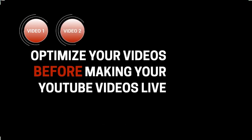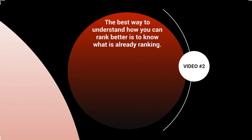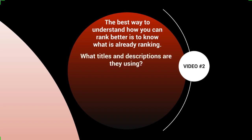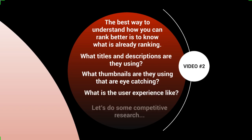Hello and welcome back — this is video number two. Let's talk about competitive research. The best way to understand how you can rank better is to know what is already ranking in your niche or market. We want to analyze the videos at the top and look specifically at what titles, descriptions, and thumbnails they're using, and what the user experience is like when you click through those videos.